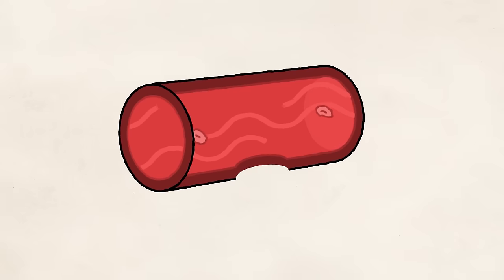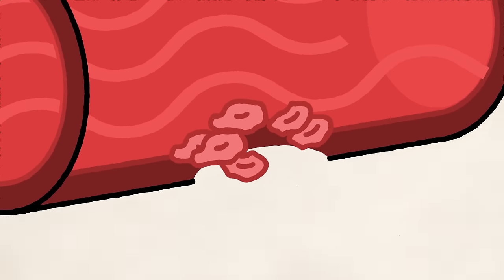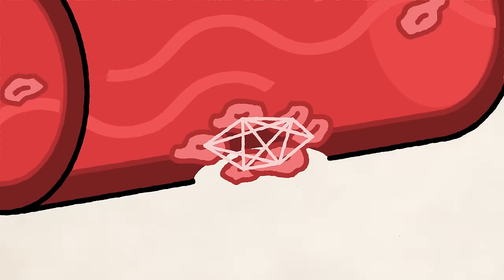Normally when there's a tear or hole in one of these, bleeding starts and different parts of the blood go to work to plug the hole. Blood cells called platelets gather at the opening and other blood parts called clotting factors help hold the platelets together to form a clot that stops the bleeding.